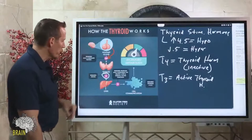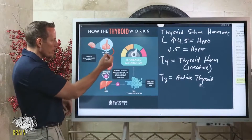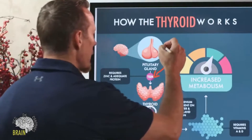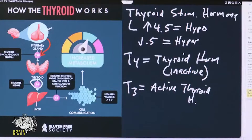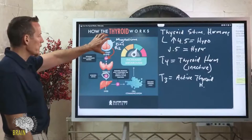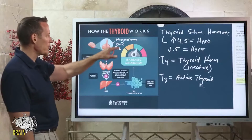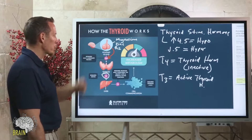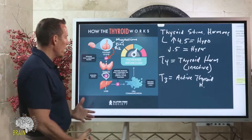TSH from the brain is thyroid stimulating hormone — not thyroid hormone itself. Nutritionally, this process requires magnesium, zinc, and vitamin B12. These three are required for your pituitary to produce TSH. Without adequate quantities of these nutrients, you'll end up with abnormalities in TSH.